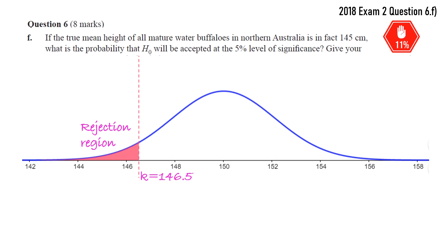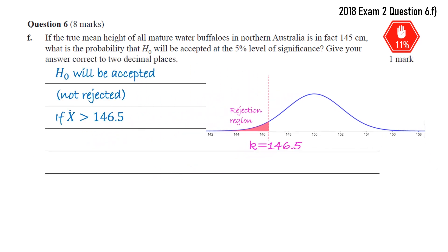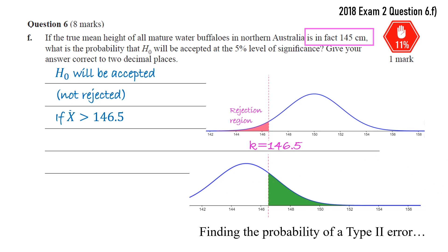Now, here we said we're not rejecting. So we're going to be to the right of that value. We want X bar to be greater than 146.5. So to find the probability a type 2 error occurs, because the null hypothesis is false, we need to know the true mean. And we are given a true mean here is 145 instead of 150. So we need now a new distribution with the mean of 145. The standard deviation we assume doesn't change.